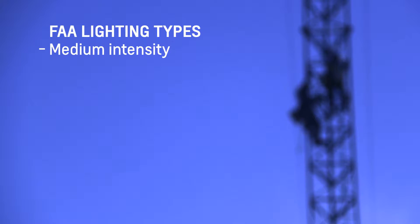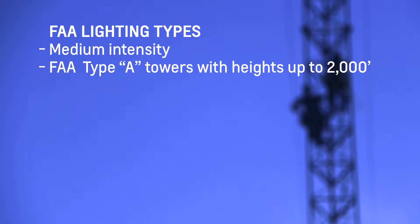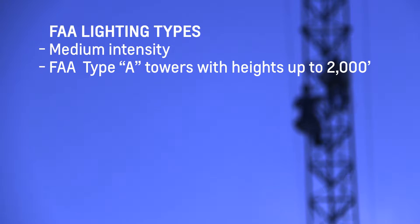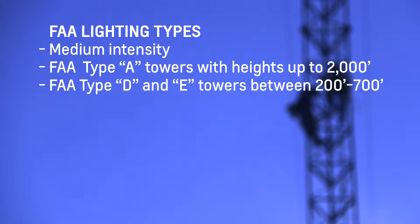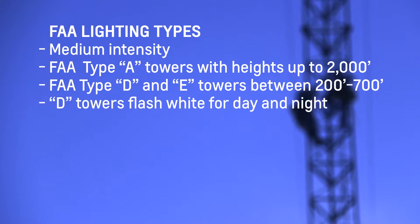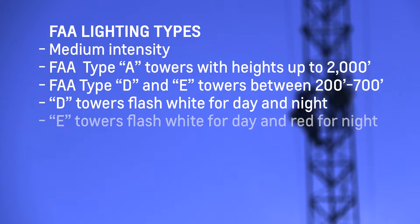FAA lighting types - Medium intensity. This lighting is used on FAA type A towers, which flash red at night and are painted with orange and white stripes. These towers can reach heights up to two thousand feet. Medium intensity lighting is also used on FAA type D and E towers, which are between 200 feet and 700 feet. FAA type D tower lighting flashes white for day and night, while type E tower lighting flashes white for day and red at night.